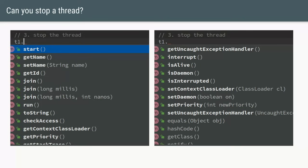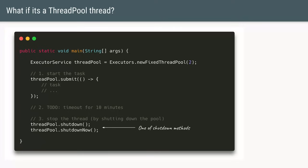So we cannot really kill or stop a thread directly. What other alternatives do we have? Instead of a raw thread, let's try a thread pool. We'll create a thread pool and submit our task in the form of a runnable to it. Now it's the thread pool's responsibility to assign a thread to that task and run it.